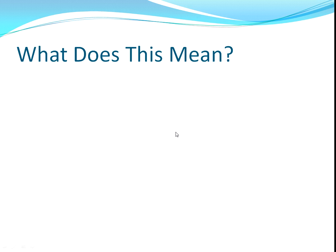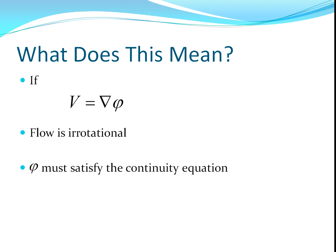And this is the lowercase of the Greek letter phi. So what does it mean? What does it mean if you can write v as a gradient of phi? Well, if you can do this, you have an irrotational flow. All potential flows must be irrotational. And I'll prove that in the next slide.